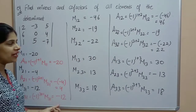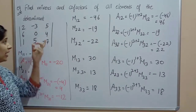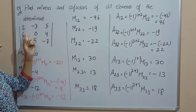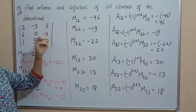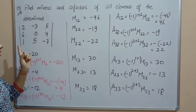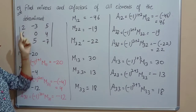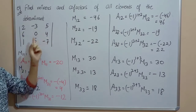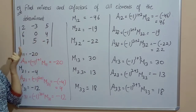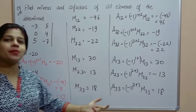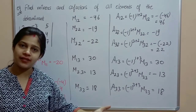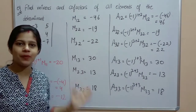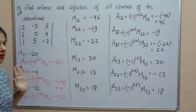So you have all the minors and co-factors. How many elements are there in total in this determinant? 9 elements — 1, 2, 3, 4, 5, 6, 7, 8, 9. You have found the minors of all nine elements and all nine co-factors. That is your answer.